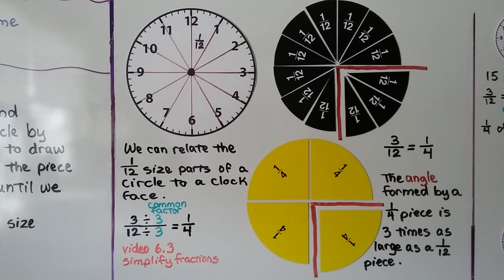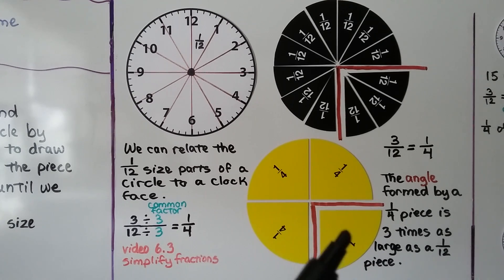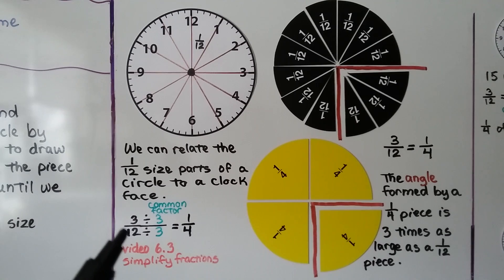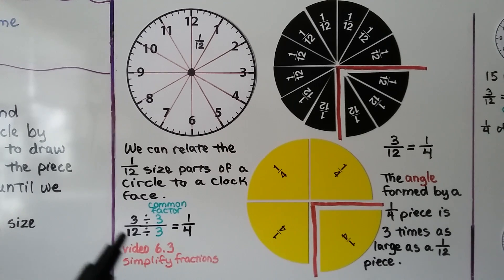We can relate the one-twelfth size part of a circle to a clock face. Three-twelfths is equal to one-fourth, and the angle formed by a one-fourth piece is three times as large as a one-twelfth piece — that's why it takes three of these to equal one of these. We have three-twelfths; we divide both the numerator and denominator by their common factor of three: three divided by three is one, twelve divided by three is four. Three-twelfths is equal to one-fourth.